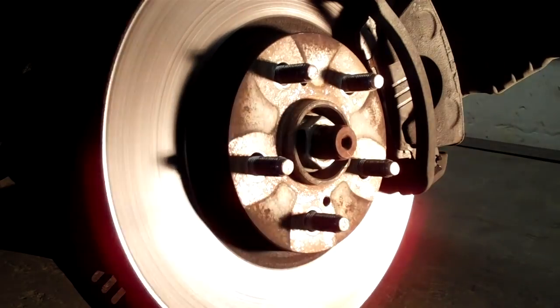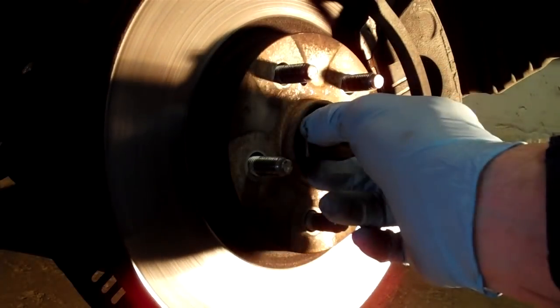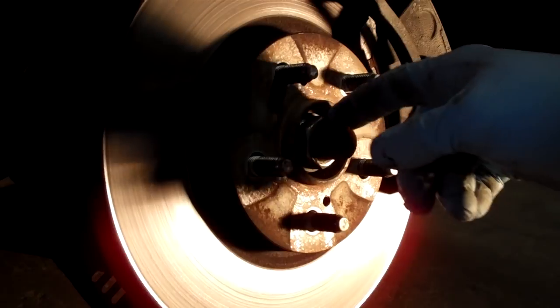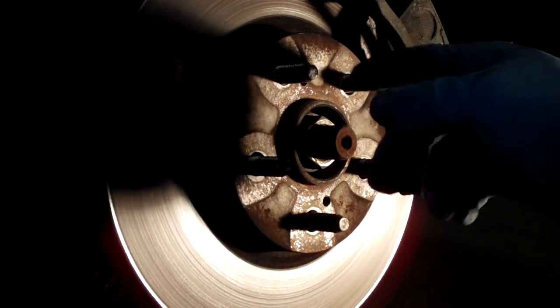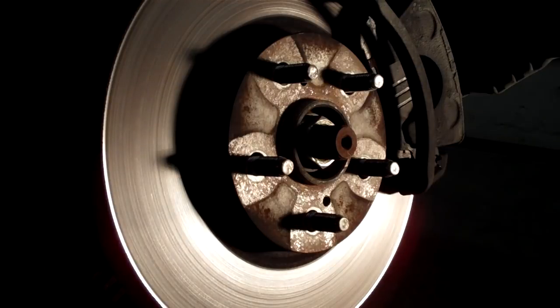And then use your impact gun. You can cut it off flush. Use your impact gun, back it out. Because once you take your nut off, these are a softer metal and you can just tap them out with a punch or use a nail and a hammer to punch them out.